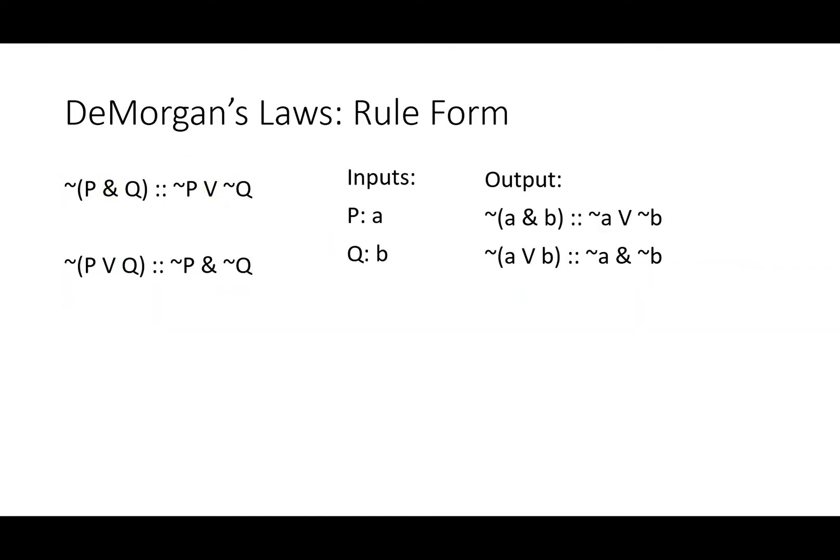Simple inputs can help us figure this out. We'll put in A and B. We get it's not the case that A and B is equivalent to either not A or not B. And neither A nor B is equivalent to not A and not B.